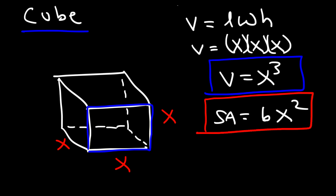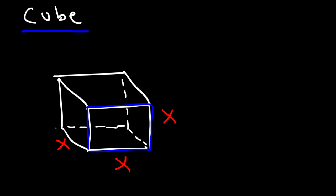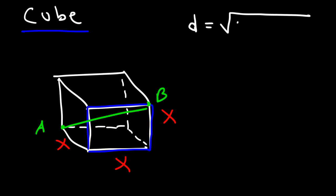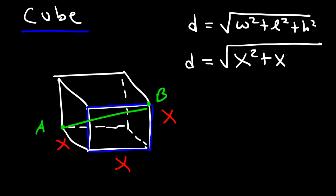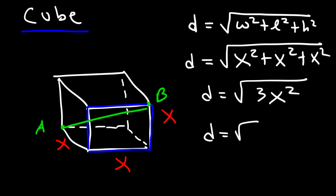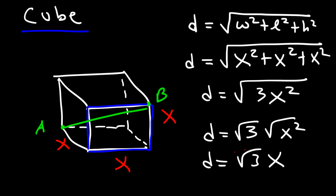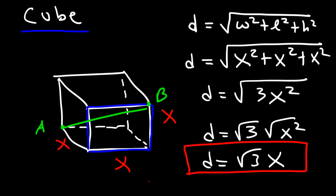The diagonal length of a cube uses the rectangular prism formula. Since W, L, and H all equal X, we get the square root of X squared plus X squared plus X squared, which is the square root of 3X squared. That simplifies to the square root of 3 times X. So now you know the basic 3D shapes and the equations and formulas that go along with them. Thanks for watching.